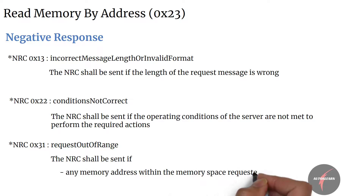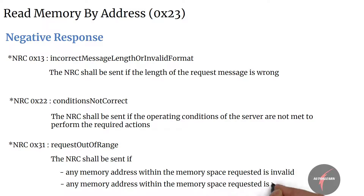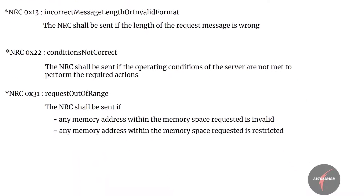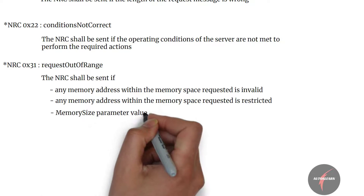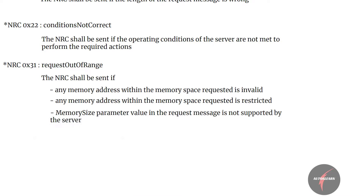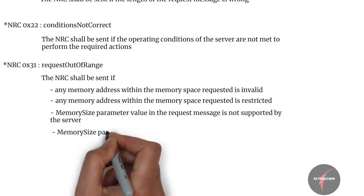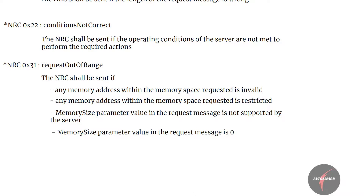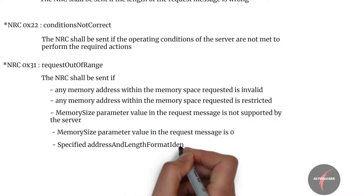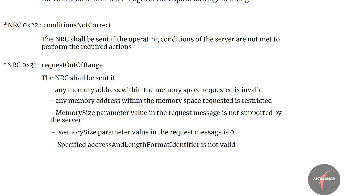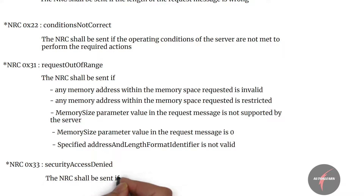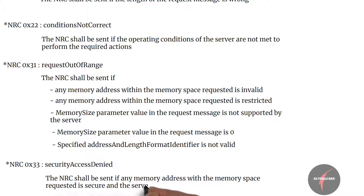NRC 0x31 applies if any memory address within the requested memory space is invalid, or if any address within the memory space requested is restricted, or if the memory size parameter value in the request message is not supported by the server, or if the memory size parameter value in the request message is zero, or if the specified address and length format identifier is not valid.